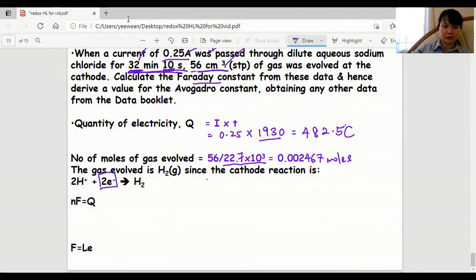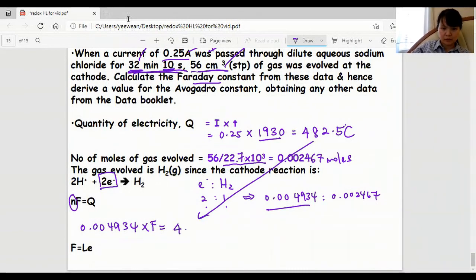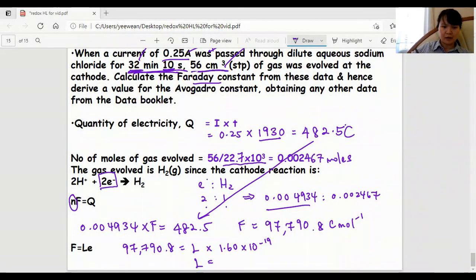I need to calculate the mole of electrons to use NF equals Q. By ratio two to one, 0.002467 multiplied by 2 is 0.004934. That's my N. Using NF equals Q, the Faraday constant is a slightly different calculated value, not from the data booklet. Using F equals LE, my L is 6.11 times 10 to the 23, not exactly the Avogadro constant from the data booklet, but this is our answer.